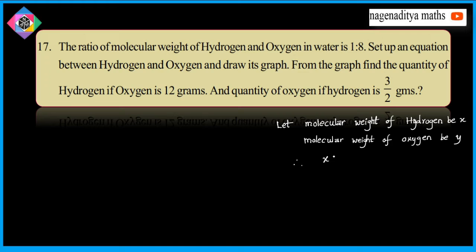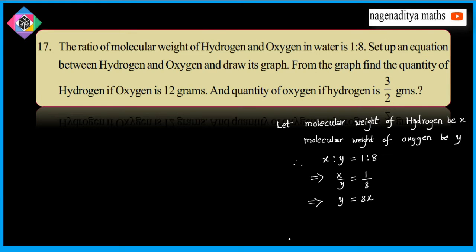By the problem, x is to y is given as 1 is to 8. This implies x by y is equal to 1 by 8. By cross multiplication, y is equal to 8x. So y is equal to 8x is the required linear equation, and we have to plot y is equal to 8x.